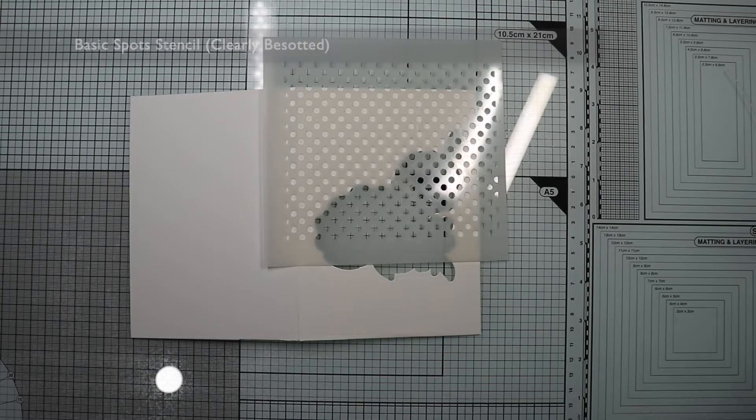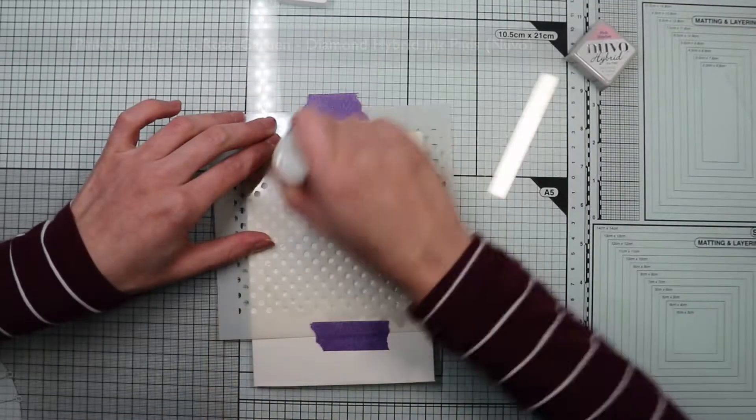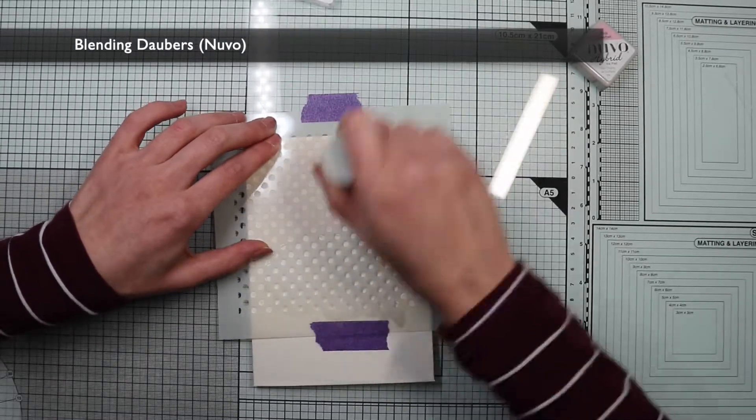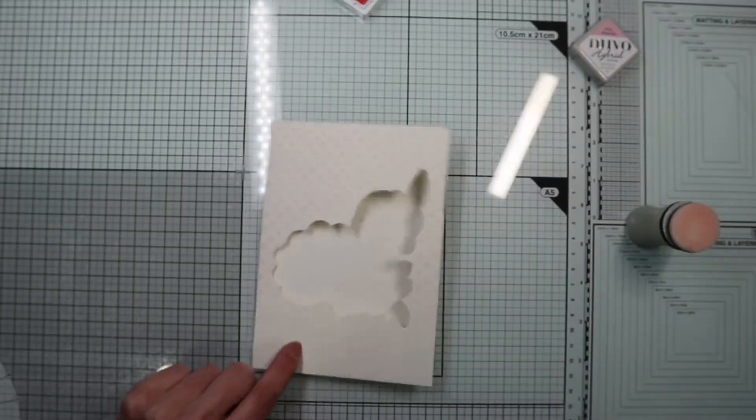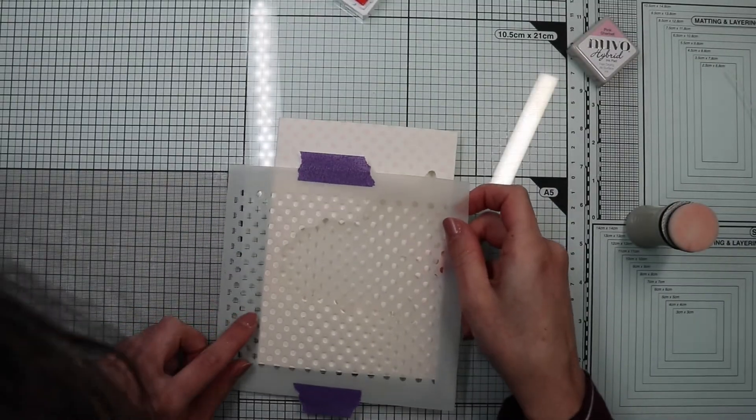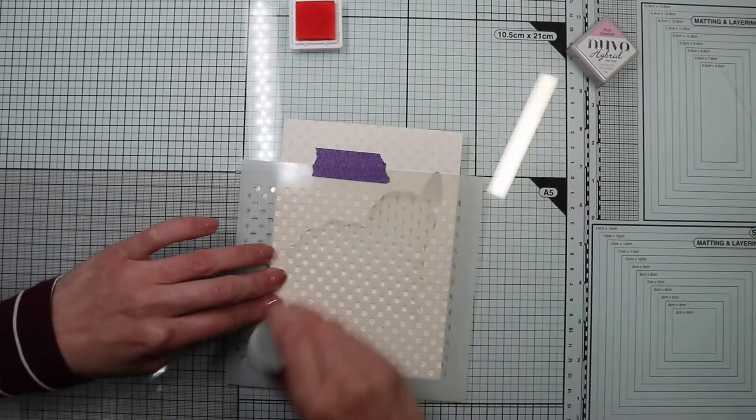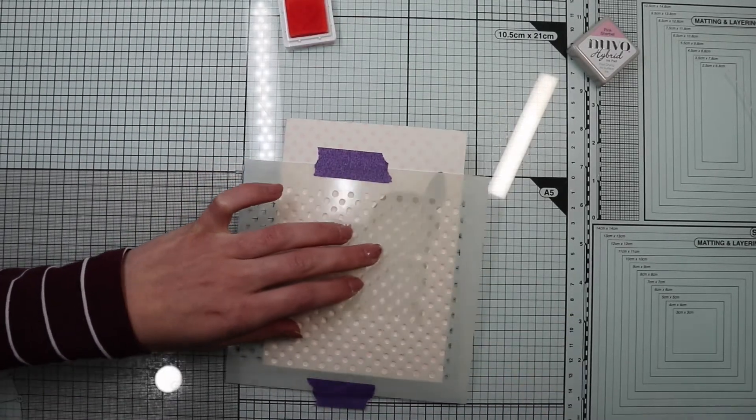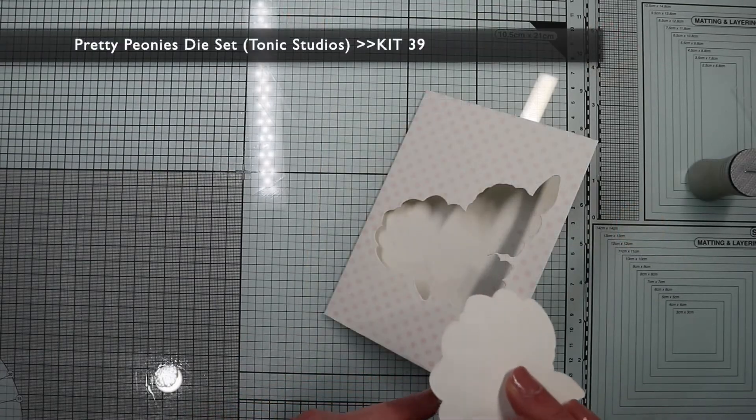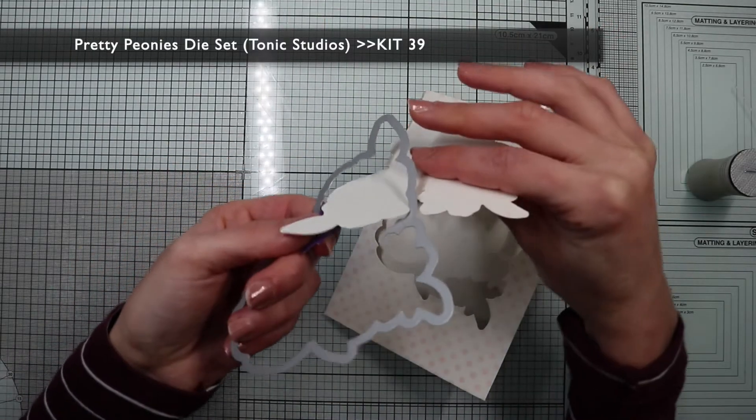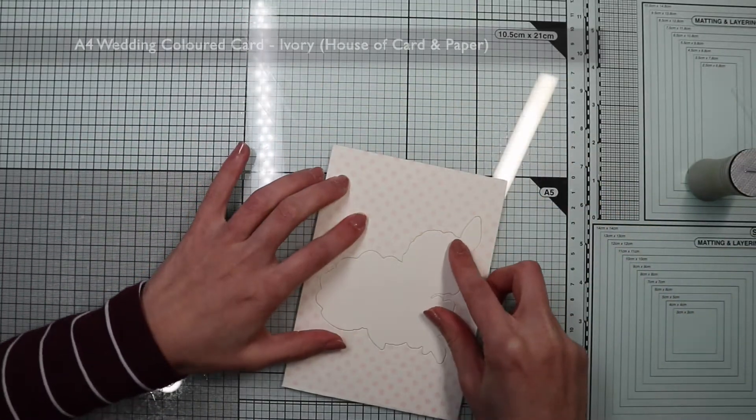I proceed to create the window on what will be the external face of the card base. Also on this face, I'm going to create a very soft background, using a stencil with a simple polka dot and spreading a light pink ink with a blending sponge.